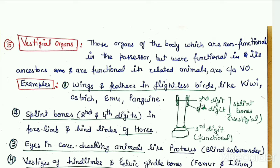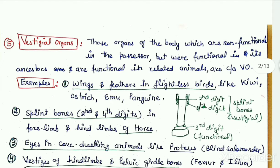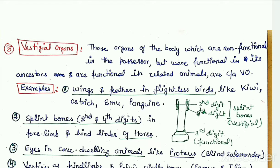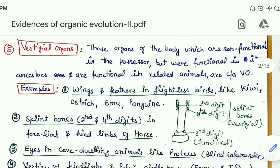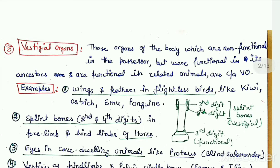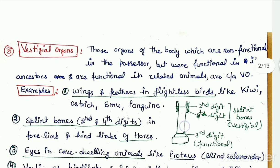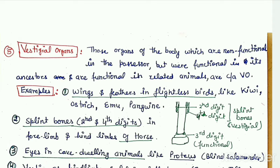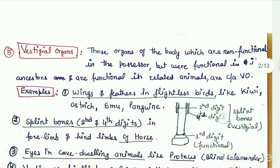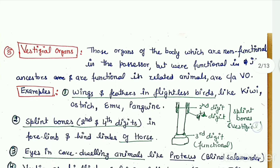This proves the interrelationship of these flightless birds with the other birds. Another example is the splint bones in the limbs of the horse. The second and fourth digits of horse's limbs are termed as the splint bones. Horse is adapted for running or the cursorial mode of locomotion. During the course of evolution, the horse's third digit got elongated very much and the other four digits progressively reduced — the first and fifth digit disappeared completely, but the second and fourth digits are still present but highly reduced and non-functional. So we term them as the vestigial organs.